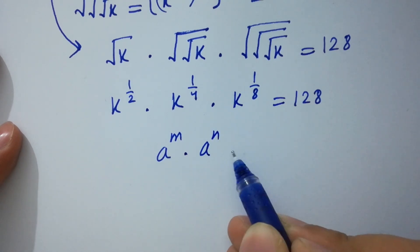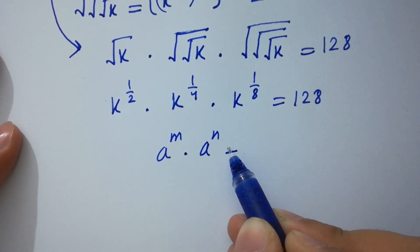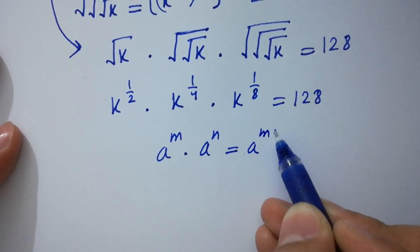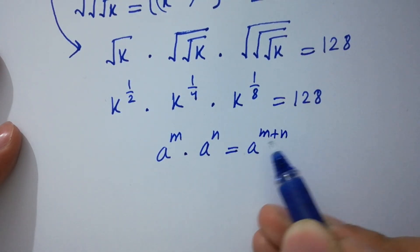As we know, a to the power m times a to the power n equals a to the power m plus n. So we add the exponents: 1 over 2 plus 1 over 4 plus 1 over 8.